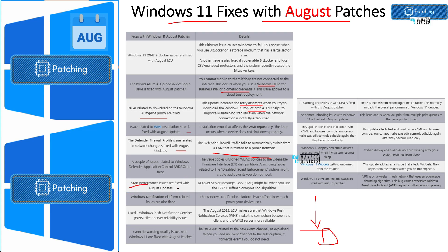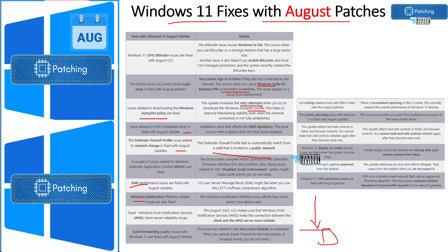An SMB-related performance issue got fixed with August patches. There are also notification-related improvements and fixes in Windows 11 after August patches. Platform-related issues got fixed, Windows Push Notification Service client-server reliability issues got fixed, event forwarding quality-related issues got fixed, and Windows 11 had an L2 cache-related issue that also got fixed.